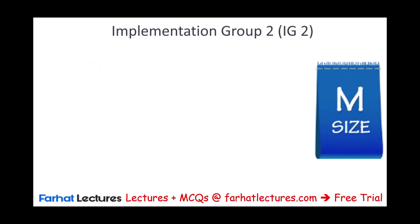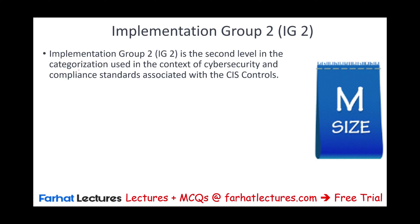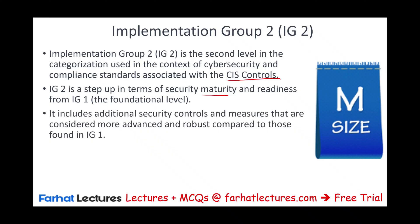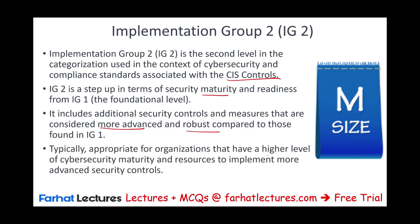IG2 is the second level in the categorization used in the context of cybersecurity and compliance standards associated with the CIS controls — you are a level higher. IG2 is set above the foundational level in terms of security maturity and readiness. It includes additional security controls and measures that are more advanced and robust compared to IG1. It is typically appropriate for organizations with a higher level of cybersecurity maturity and resources — medium-sized companies, not mom and pop, not large companies, but somewhere in between.